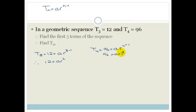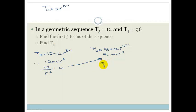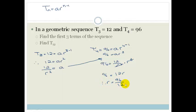We've got two equations with two unknowns. We can solve the first for A: A equals 12 over R squared. Substituting into the second equation: 96 equals 12 over R squared times R cubed. The R squared cancels with part of R cubed, leaving 12R equals 96. Therefore R equals 96 divided by 12, which is 8.